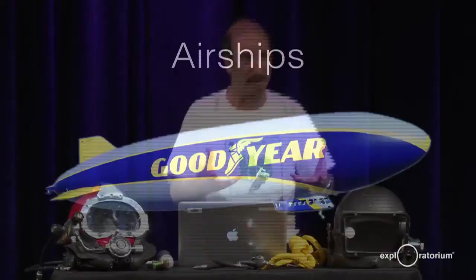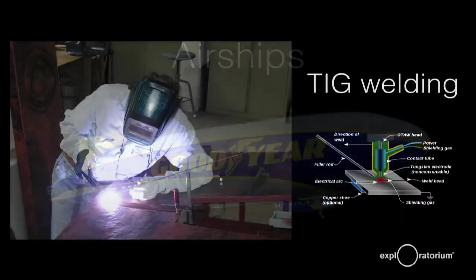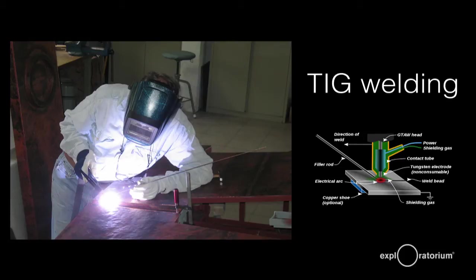Helium has a lot of interesting applications. Of course, everyone's familiar with using it for balloons and airships because it floats. Another cool use is in TIG welding — Tungsten Inert Gas Welding — where you want to weld things like aluminum or bronze. If you weld aluminum in air, it oxidizes, so you keep it in a stream of helium or argon as a shield to prevent oxidation while the metal is super hot.